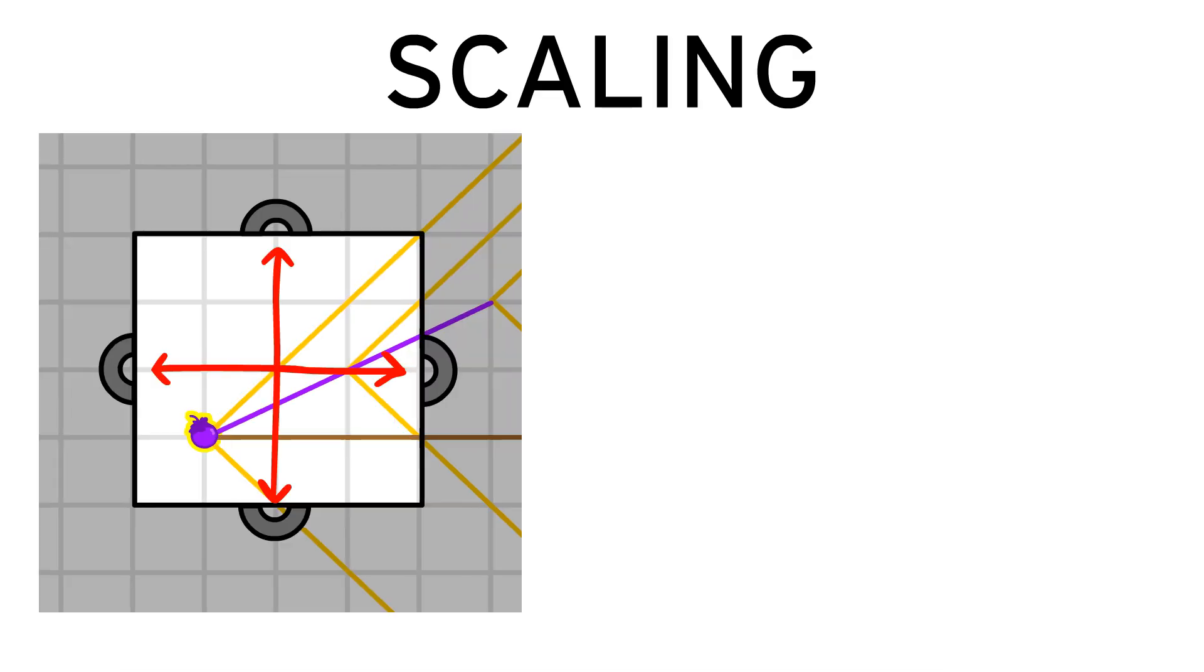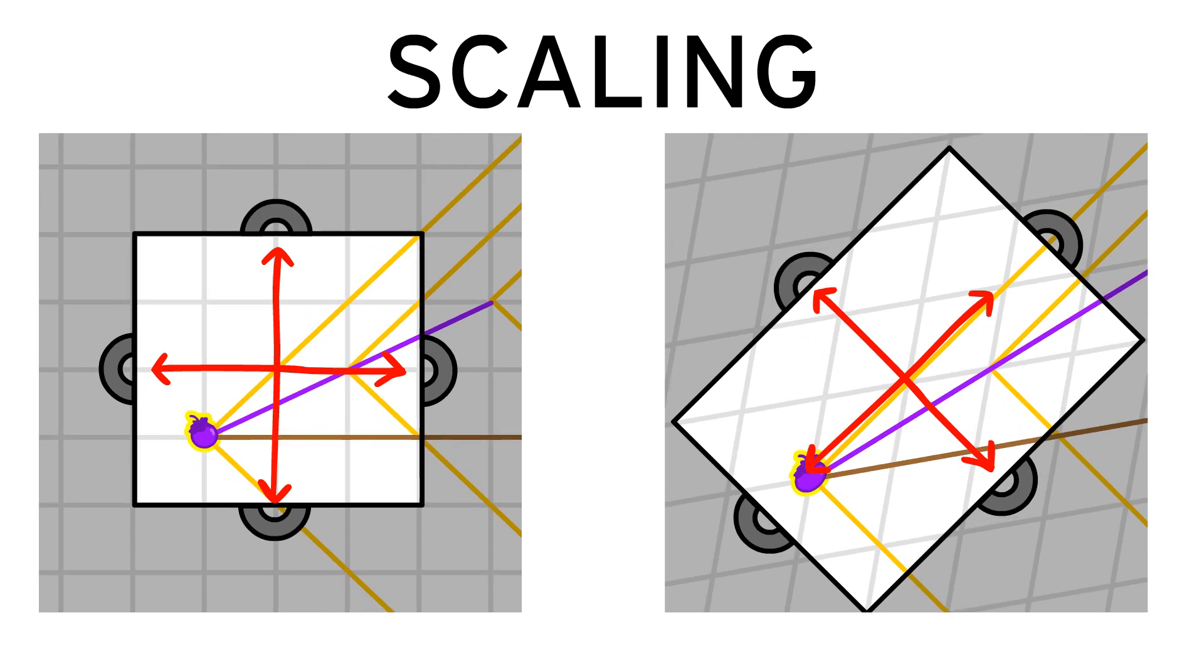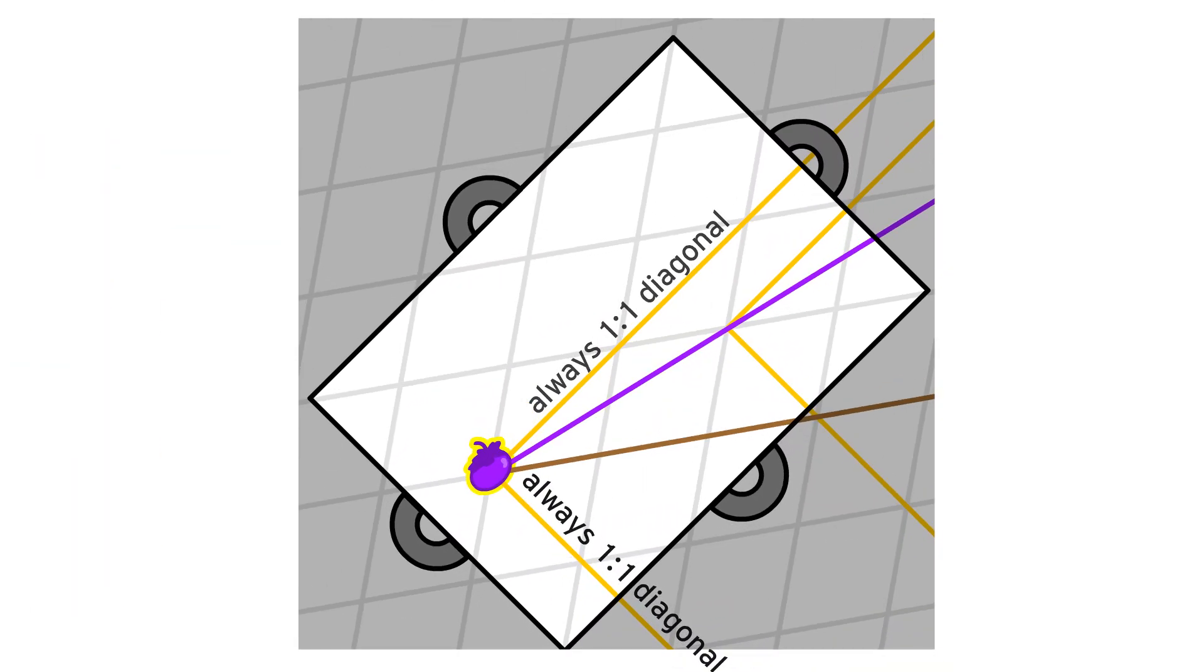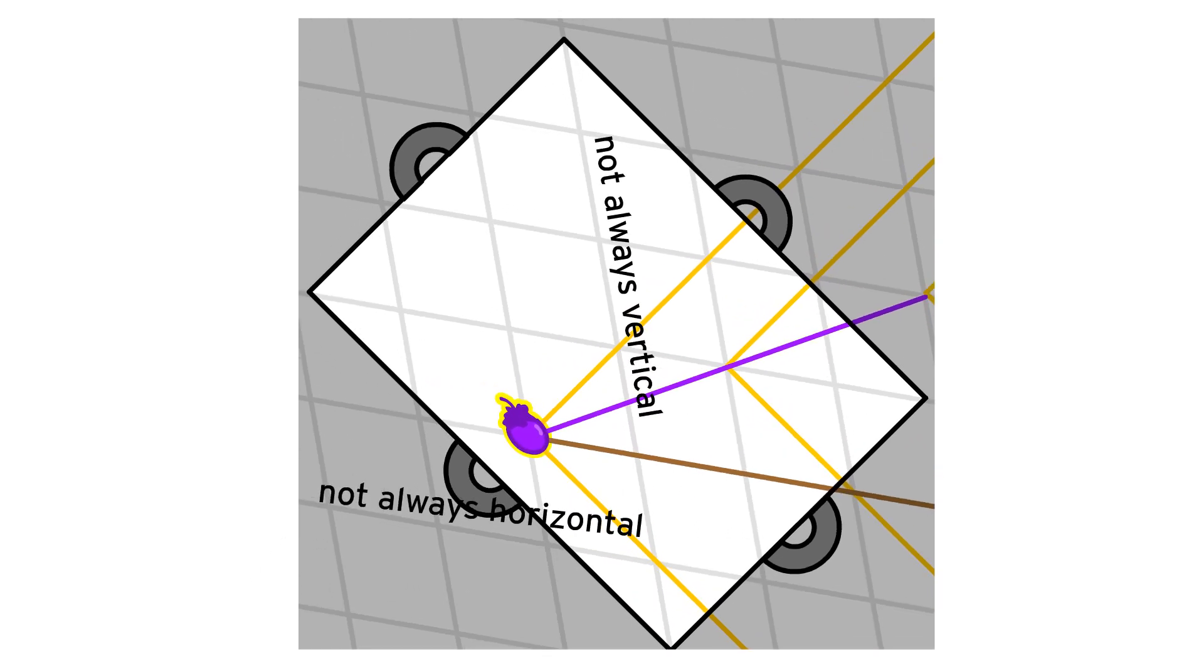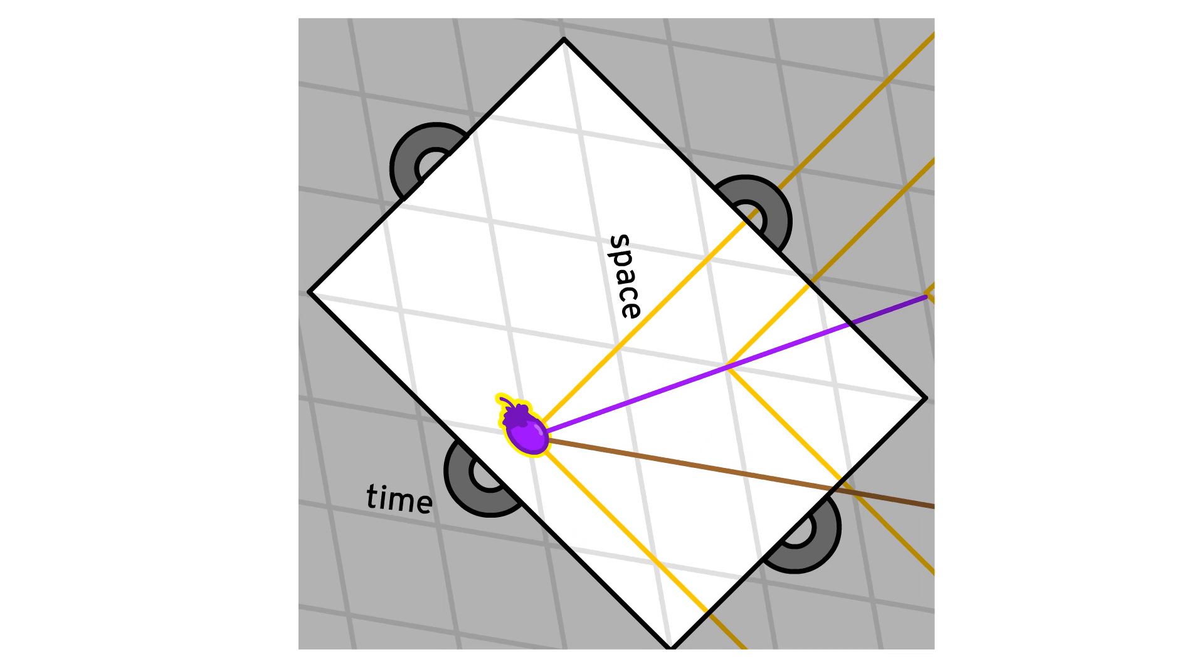We can also do diagonal scaling. And when we do this, one-to-one diagonal lines do indeed stay the same. However, horizontal and vertical lines now change a bit, which means that both time and space will get distorted, but that is okay.